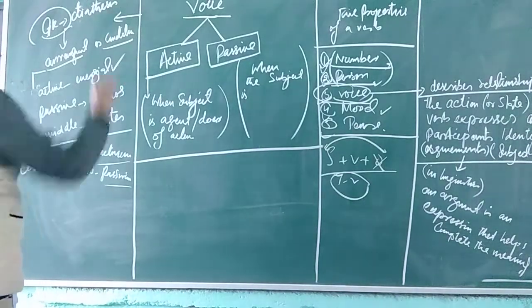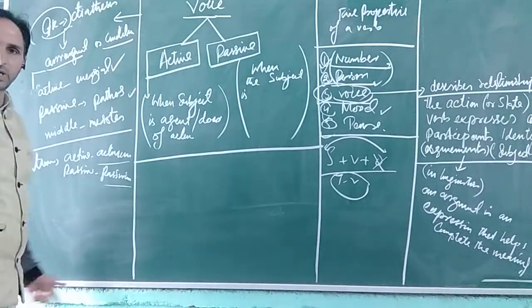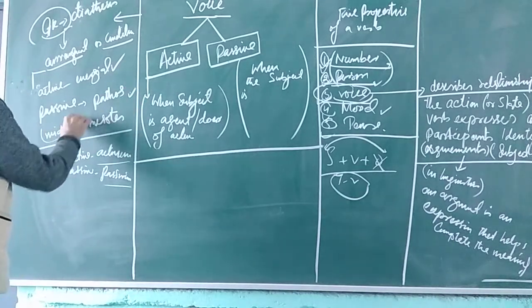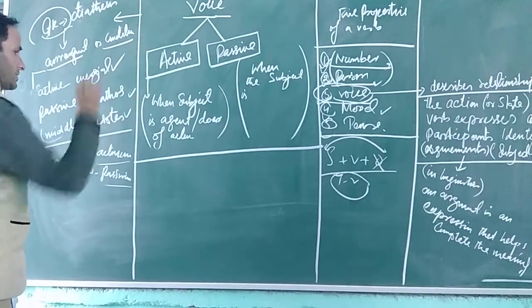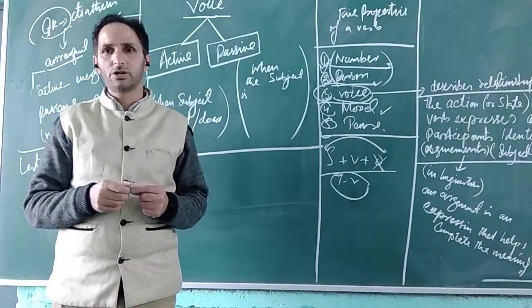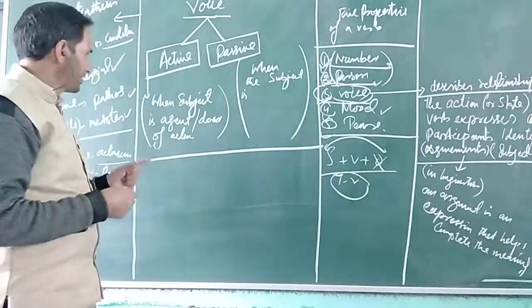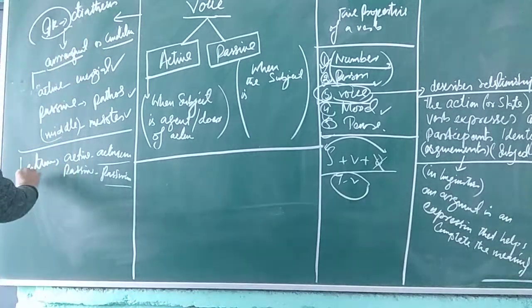In Greek we call active voice energeia, passive is called pathos, and there is one more voice that is middle. In Greek language, this voice has three constituents: active, passive, and middle.